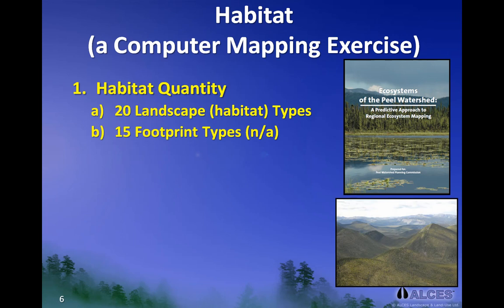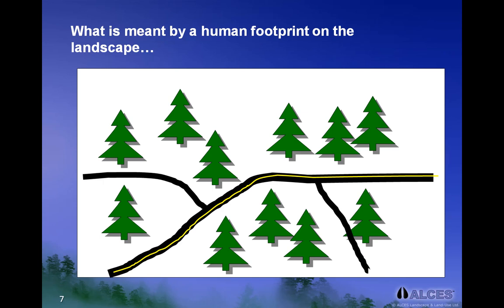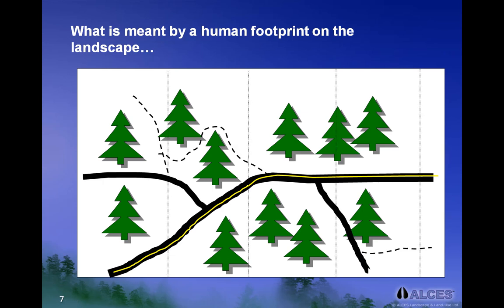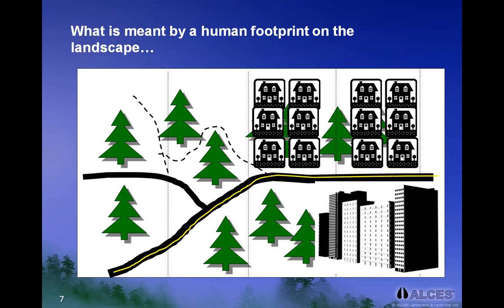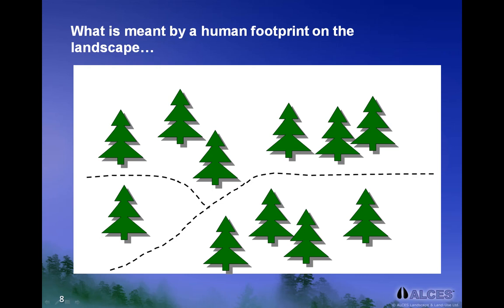The model also required information on the amount of human footprint within the study area. A human footprint is a feature on the landscape that occupies a certain amount of space and was created by people. Some examples include major roads, minor roads, trails, seismic lines, towns, cities, acreages, pipeline and transmission line right-of-ways, well pads, surface mines, and agriculture. Human footprints can be permanent features, or they can be reclaimed over time. However, since the study area was remote, there was virtually no human footprint, so it was not included in our example.